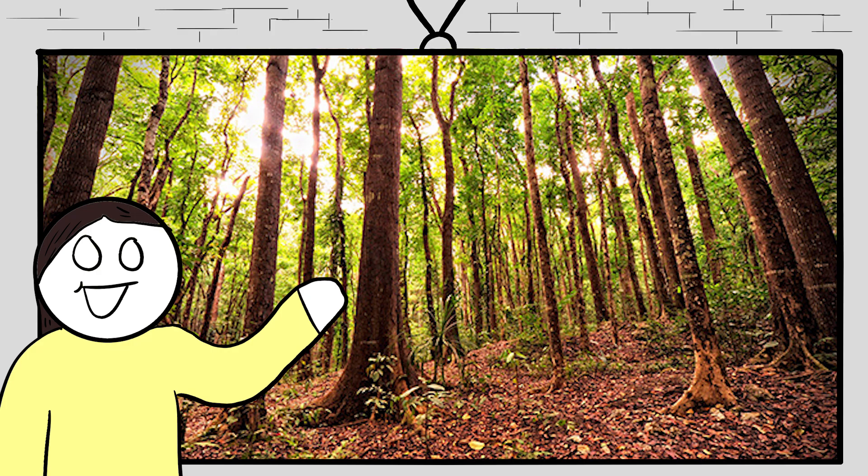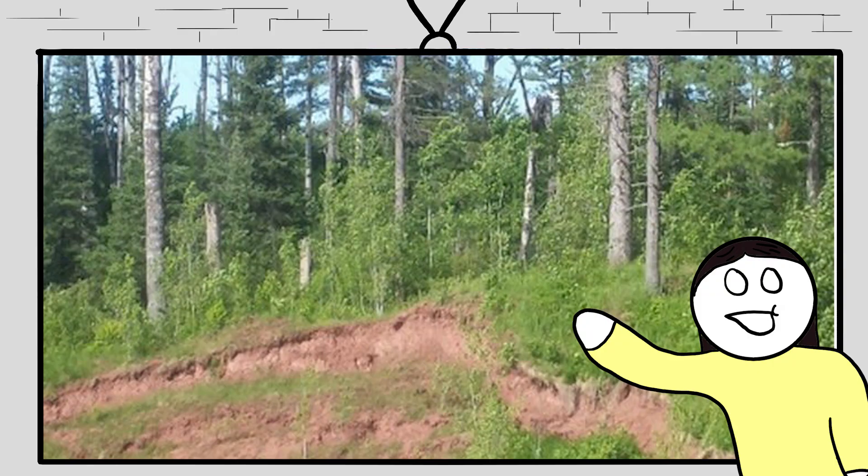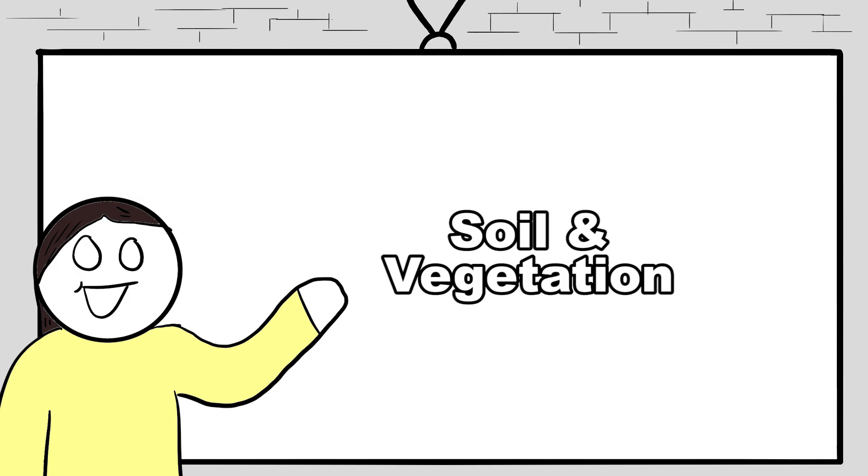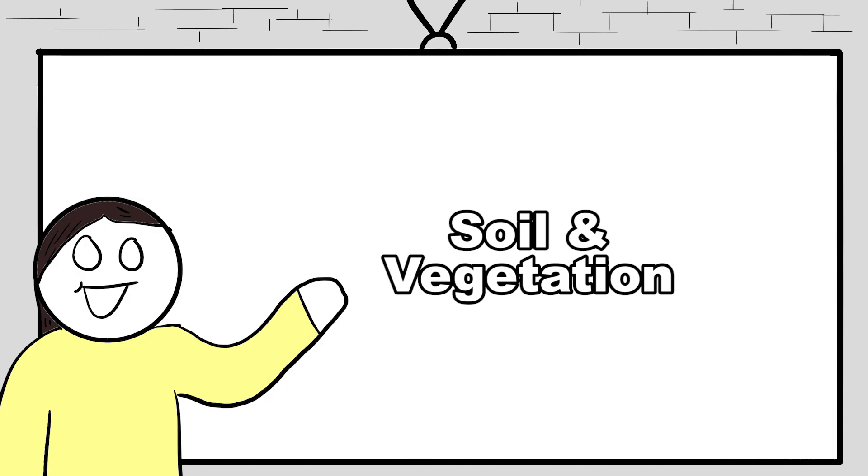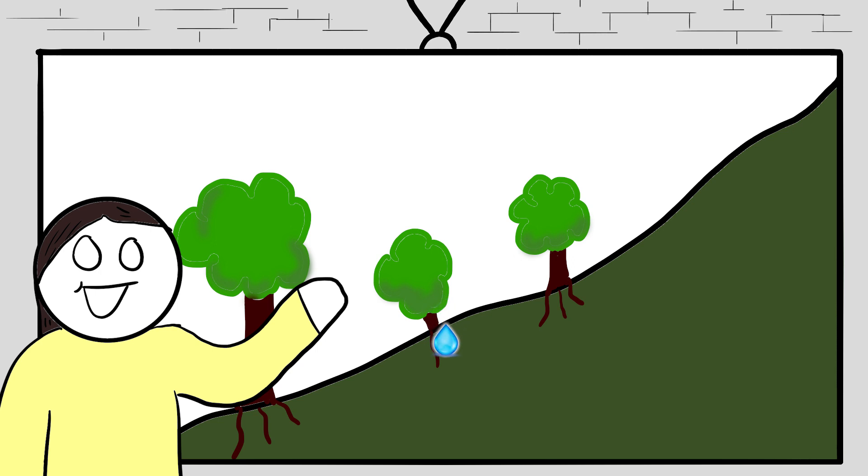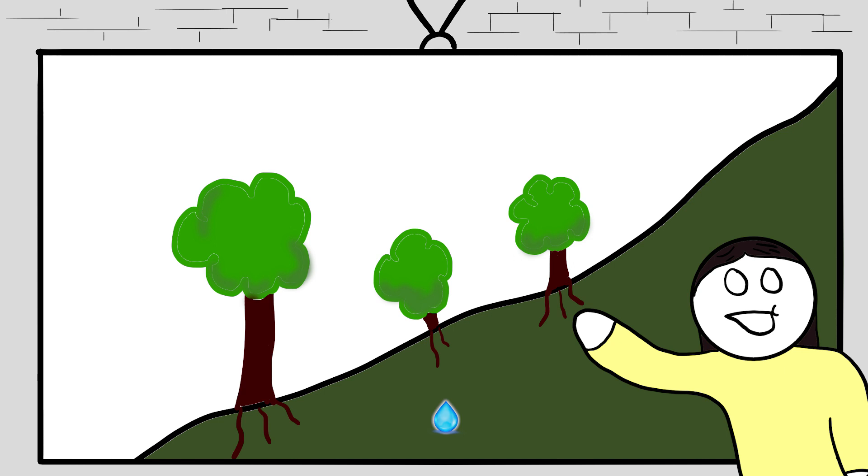Another thing that has a lot to do with how much water we can really use is looking at the soil and vegetation. For example, if we have a slope that has a lot of trees and plants on it, a lot of water will infiltrate in the soil. So the water will disappear into the ground.